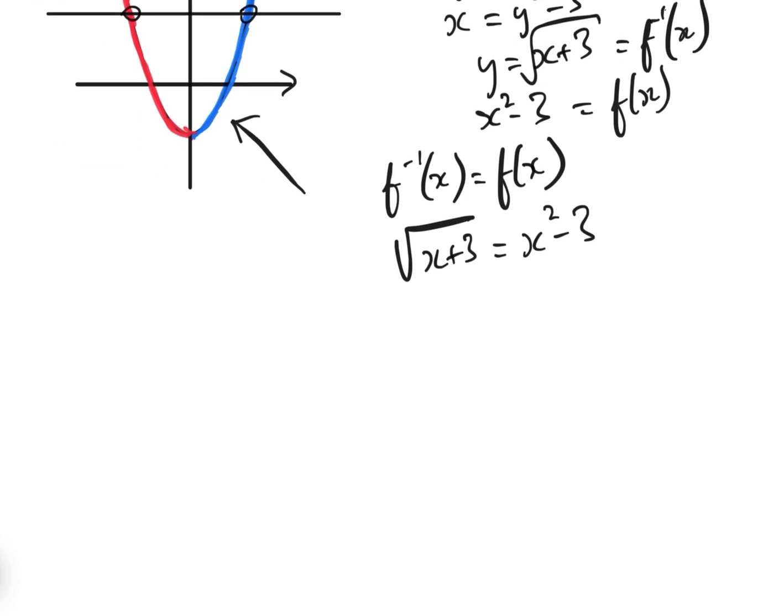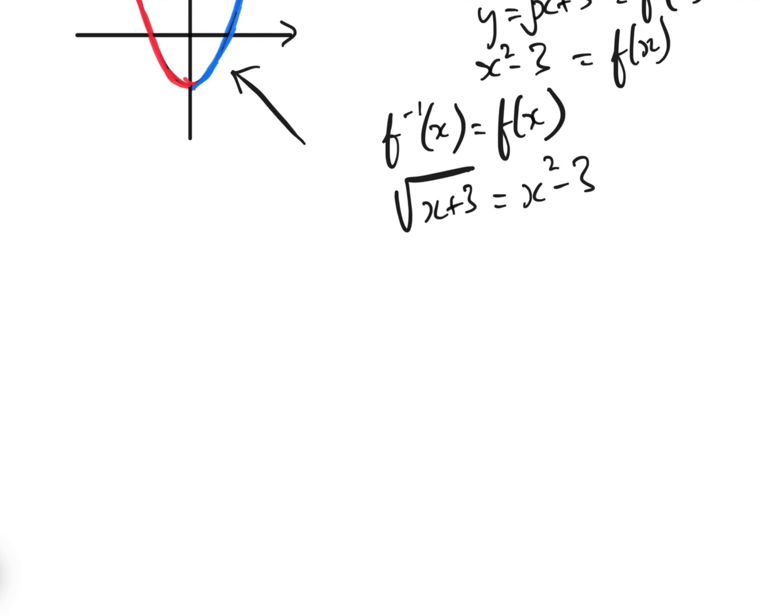Now to solve this, we're going to have to square both sides, which is going to introduce some false solutions. But anyway, here we go, so that's x plus 3 equals x squared minus 3 squared, which is x to the 4 minus 6x squared, add 9,